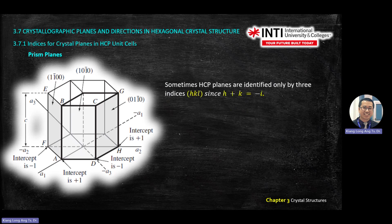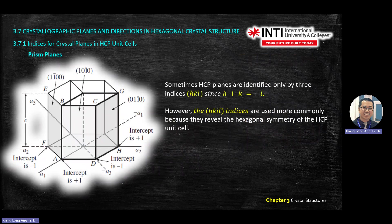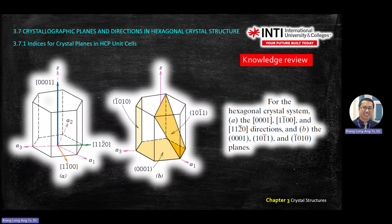If you want to convert from four numbers into three numbers, there's a step to convert HKIL into HKL by taking H plus K. It means you take H plus K equal to minus something. Direction uses square bracket; planes will be round bracket without a comma. If you put a comma, it becomes a location coordinate.